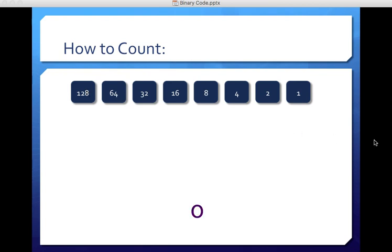All right, so let's say we want the number zero. So we don't want any value in any of these numbers because otherwise it'll be more than zero. So we just put a bunch of zeros going across. So this in binary code is the number zero.